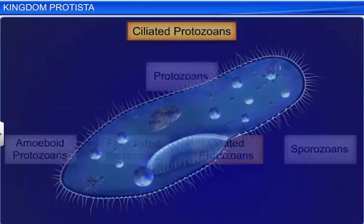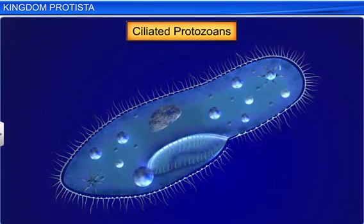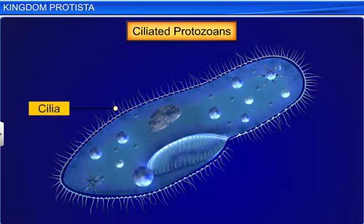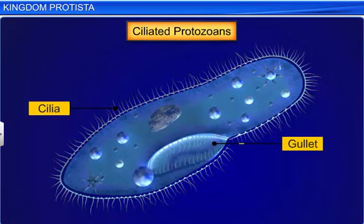Ciliated protozoans, like Paramecium, can be found at almost all places where there is water. They are very active since they possess thousands of cilia. It is the coordinated movement of these cilia that steers the water containing their food into their gullet. The gullet is a cavity that opens to the outside of the cell surface.